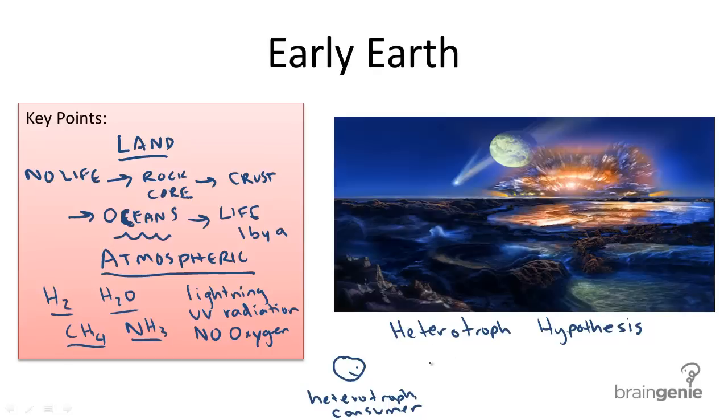So remember, there was no oxygen on the planet. Eventually, heterotrophs were not consuming enough nutrients to survive because the environment didn't have enough to supply. They couldn't keep up. So ultimately, scientists proposed that there was a new mechanism, autotrophs, which are producers.